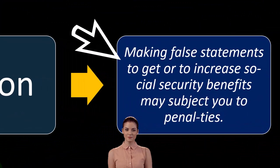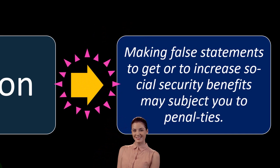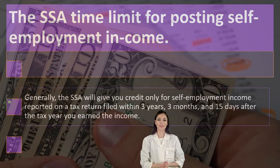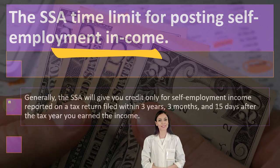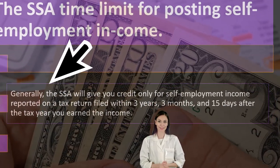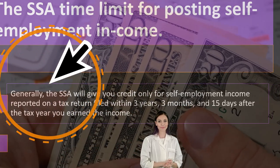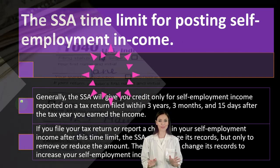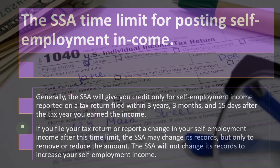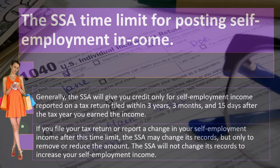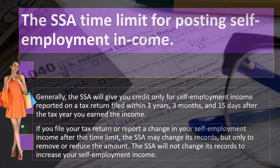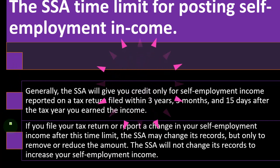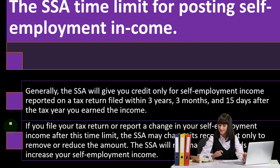Caution: making false statements to get or increase Social Security benefits may subject you to penalties — that could constitute fraud if you're intentionally falsifying documents. Regarding the SSA time limit: generally, the SSA will give you credit only for self-employment income reported on a tax return filed within three years, three months, and 15 days after the tax year you earned the income. If you file after this time limit, the SSA may only remove or reduce the amount — it will not increase your self-employment income on record.